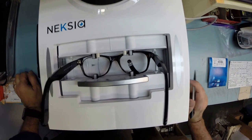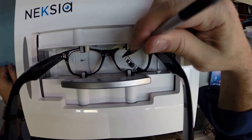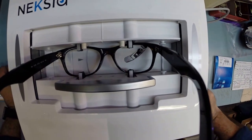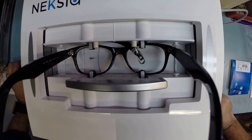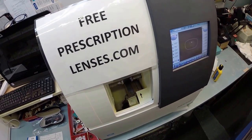I'm gonna take your frame, wake up the computer, and begin to trace the shape of your frame. A stylus is gonna pop up here and trace the shape of the right lens before moving over and tracing the left.